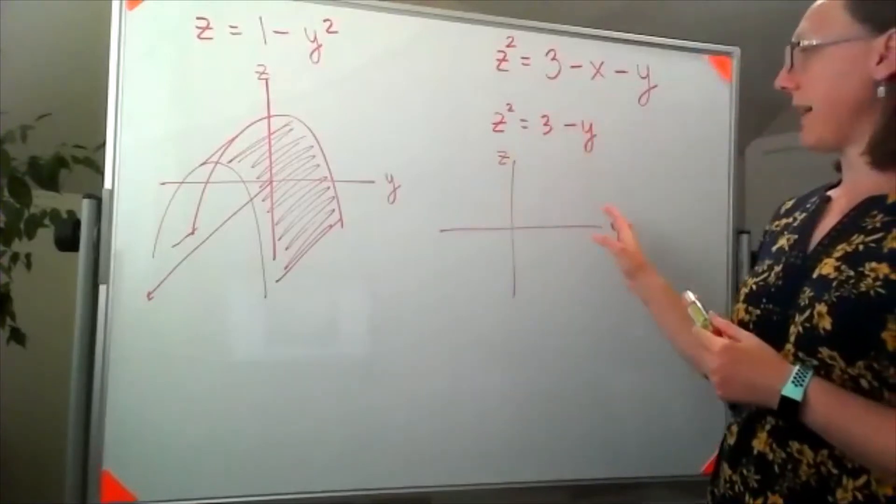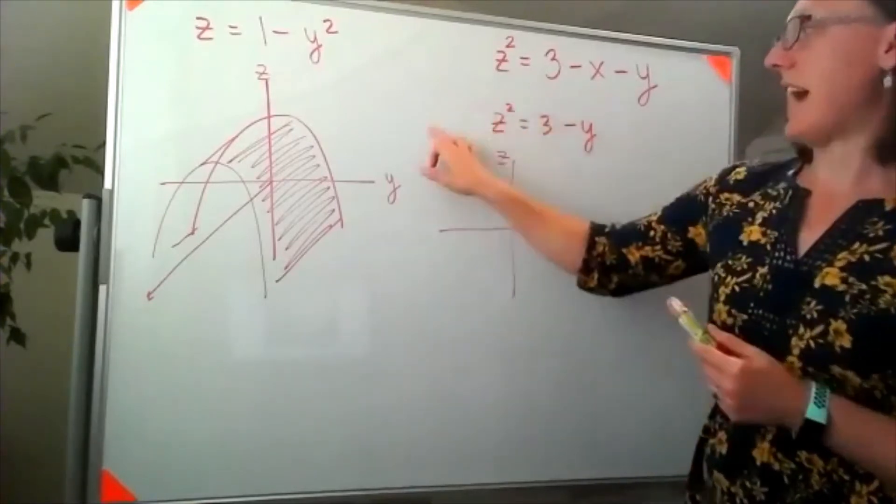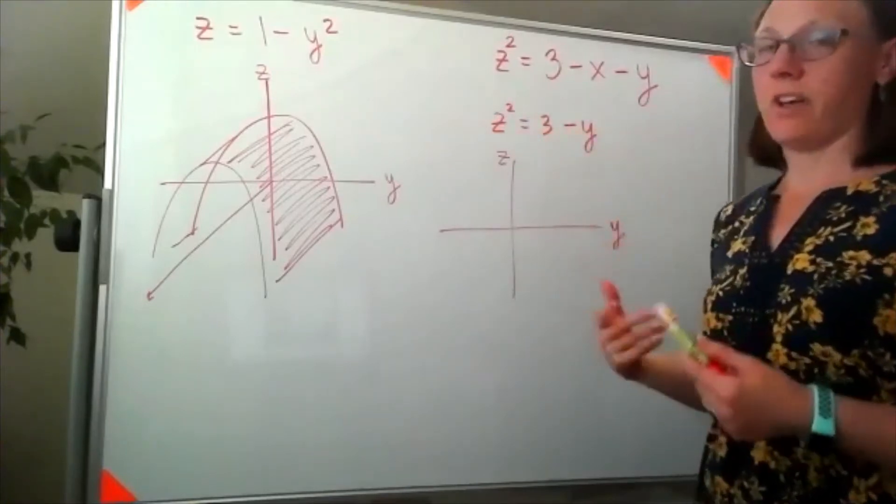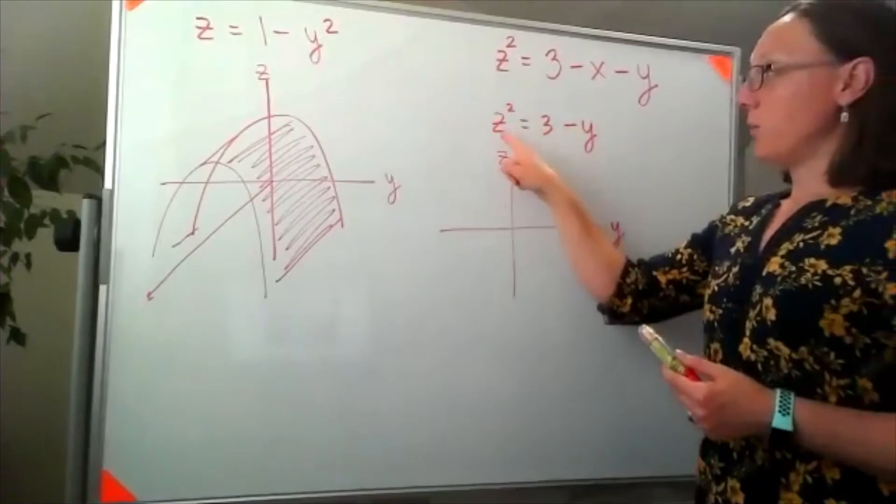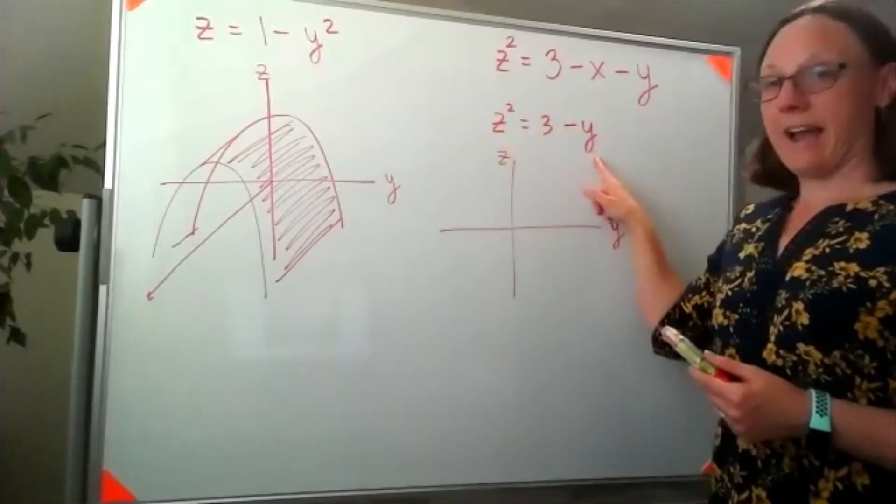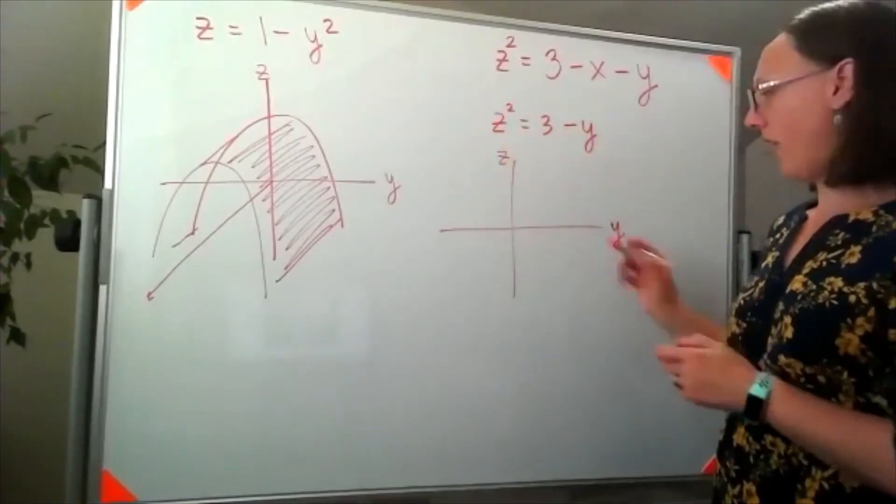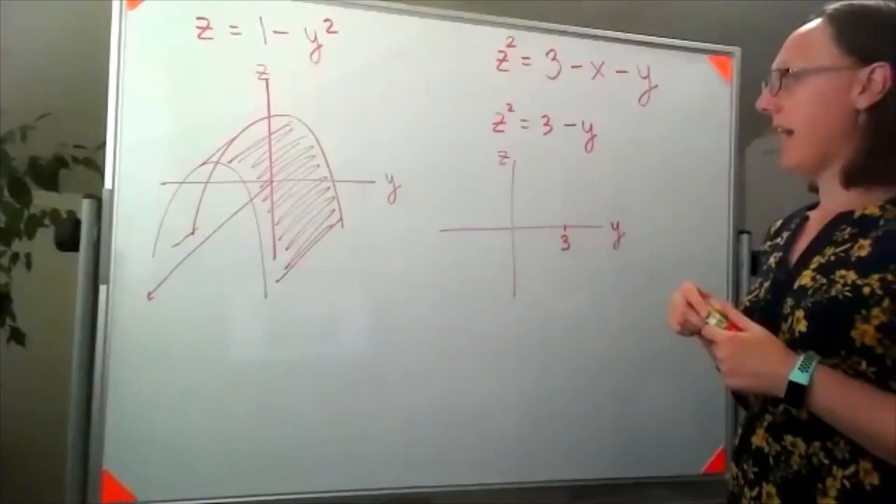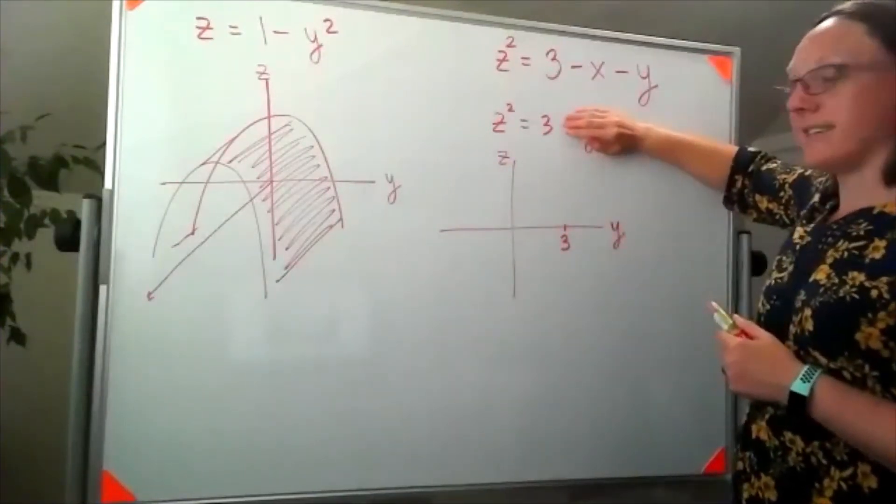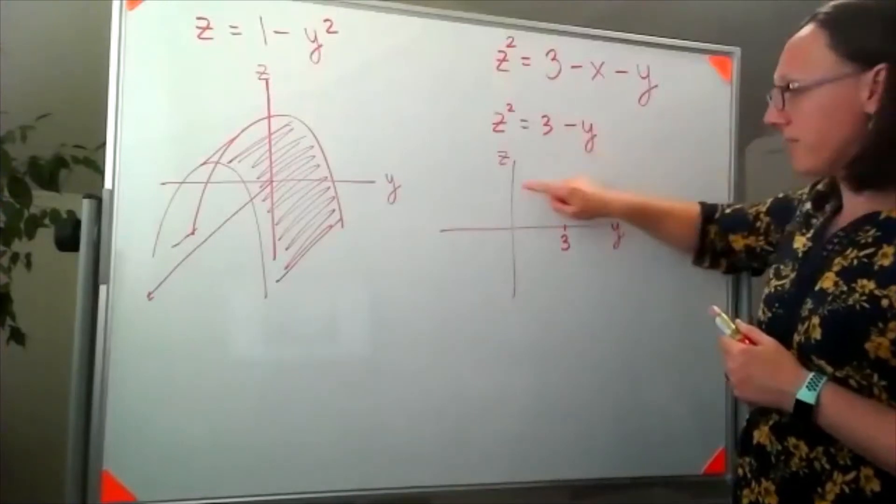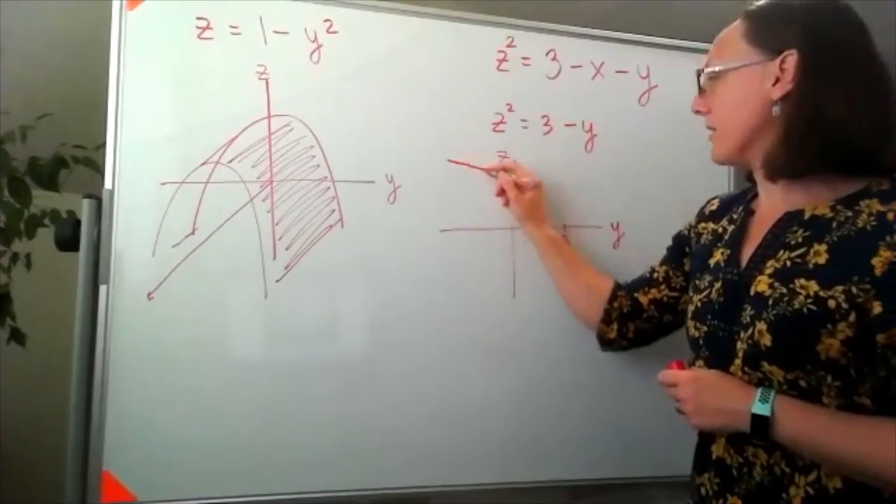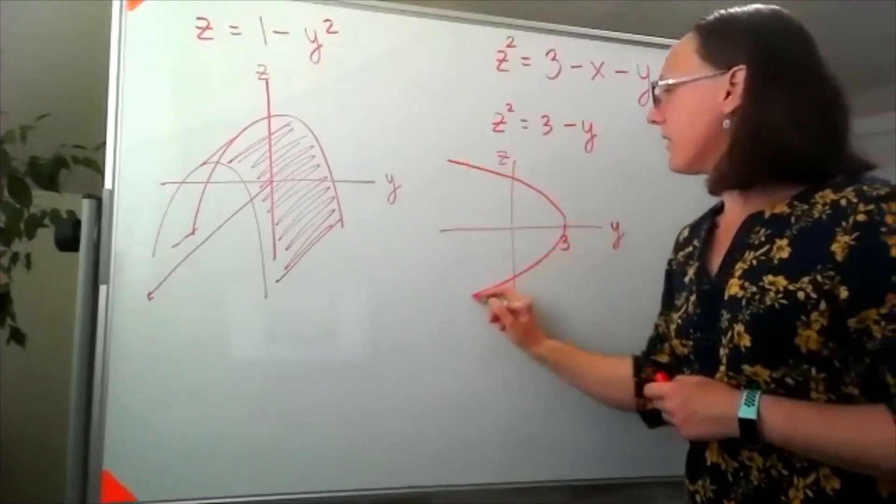And if I rearranged this, this would say X equals 3 minus Z squared, or another way to think about this, when Z is 0, Y would have to be 3. So I know it's going to hit here at 3. And then if Y was 0, Z would be plus or minus 3. So I'd be somewhere over here, which means that parabola opens this way.